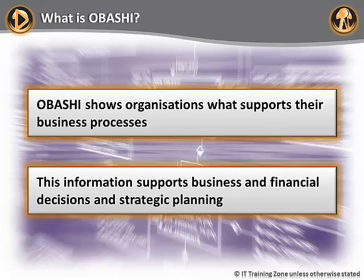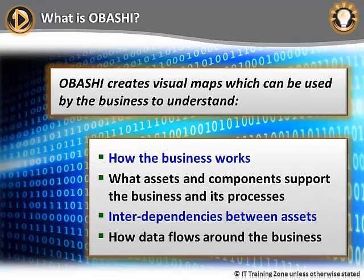The Obashi methodology allows organizations to clearly understand what is involved in supporting their business processes. Simple, powerful information can be used to support business decisions, financial decisions, and strategic planning. Obashi creates visual maps of businesses and parts of businesses. The maps are simple visual references that can be understood by staff at all levels. The maps help businesses to understand how the business works, what assets and components make the business work and support its business processes, what interdependencies exist between assets, and how data flows around the business.